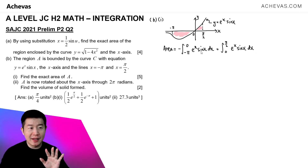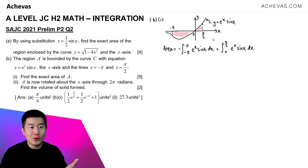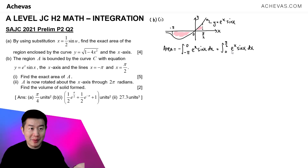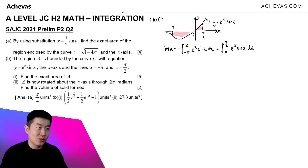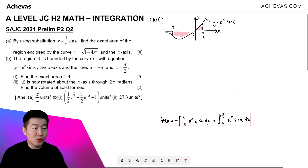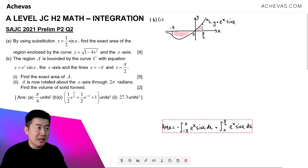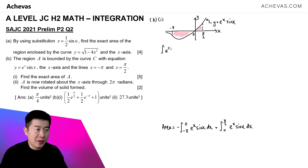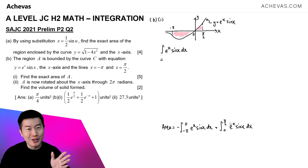We are working on two integrals with the same expression inside, so it is not efficient to integrate them separately. Furthermore, we will need to use integration by parts, which is tedious even for one integral. So to be more efficient, we will first compute the indefinite integral of eˣsin(x), then apply that result to both definite integrals.